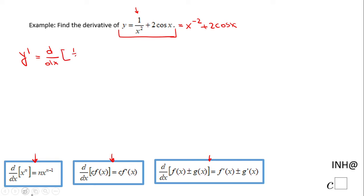In fact, where we simplify that, x to the negative 2 power, plus the derivative with respect to x of 2 cosine x. So I use the last rule, the sum rule.